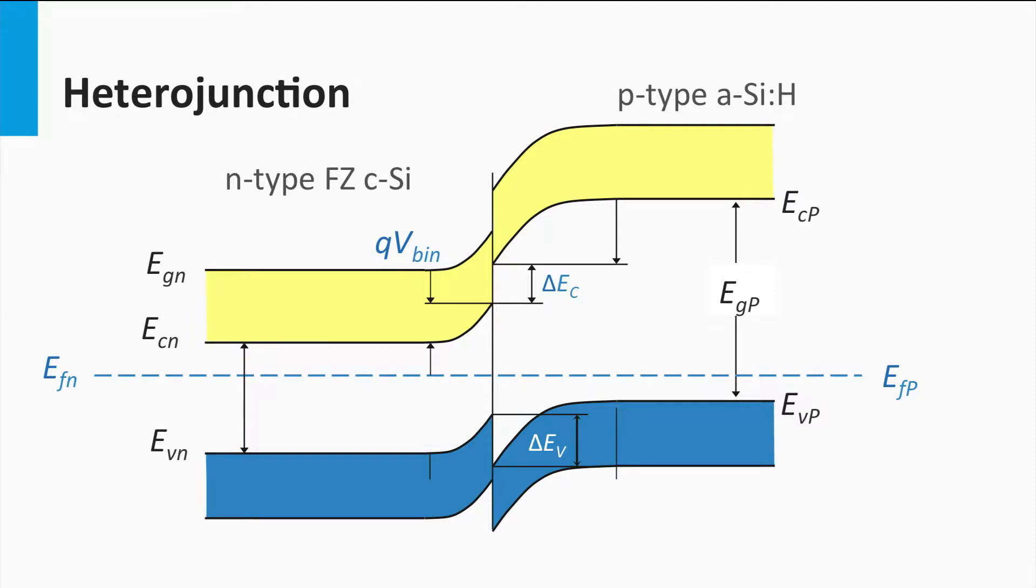At this junction you see that the valence band is higher positioned in the P-type amorphous silicon in reference to the N-type crystalline silicon. This will allow the minority charge carriers, the holes, to drift to the P-type silicon.